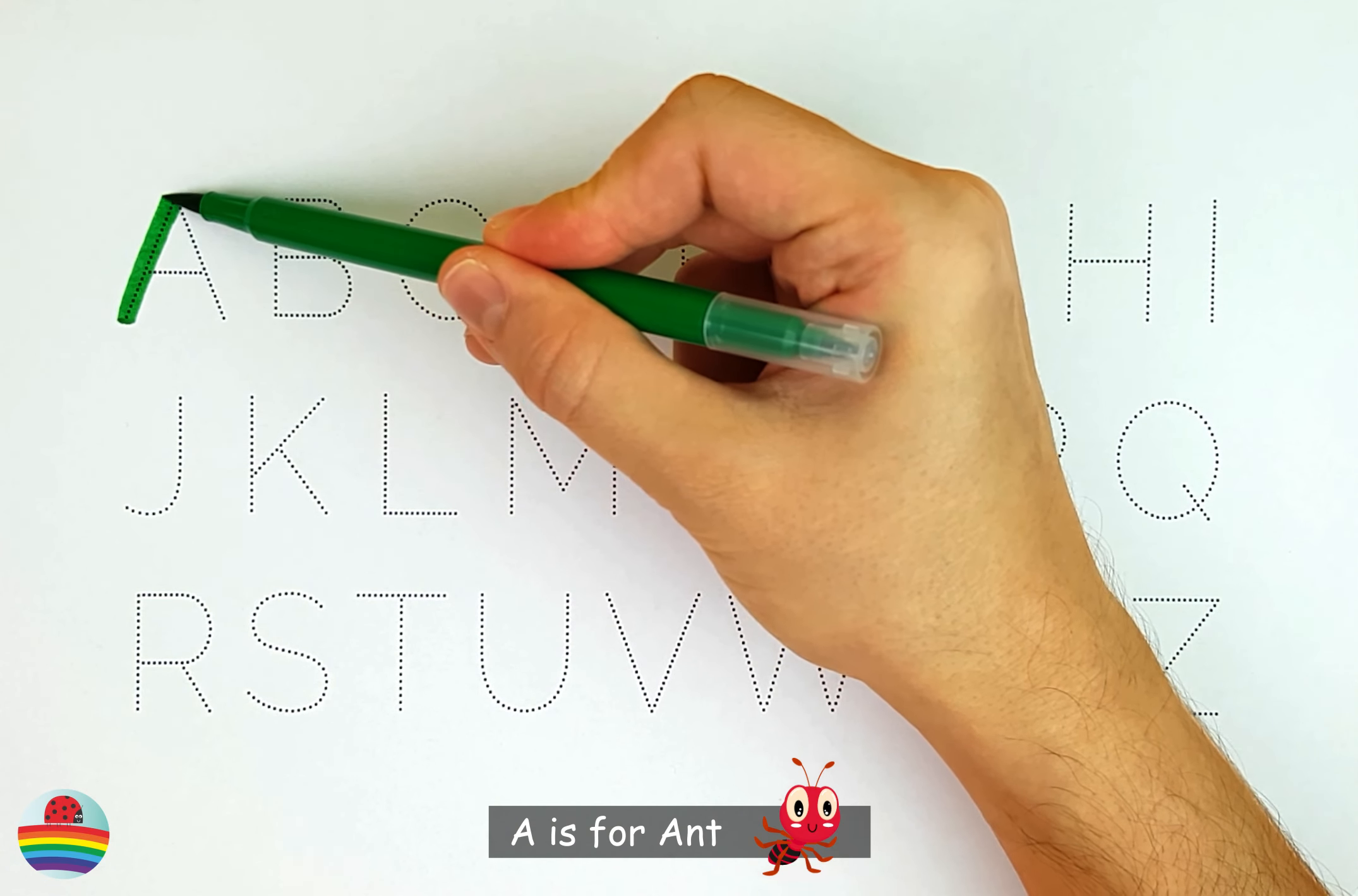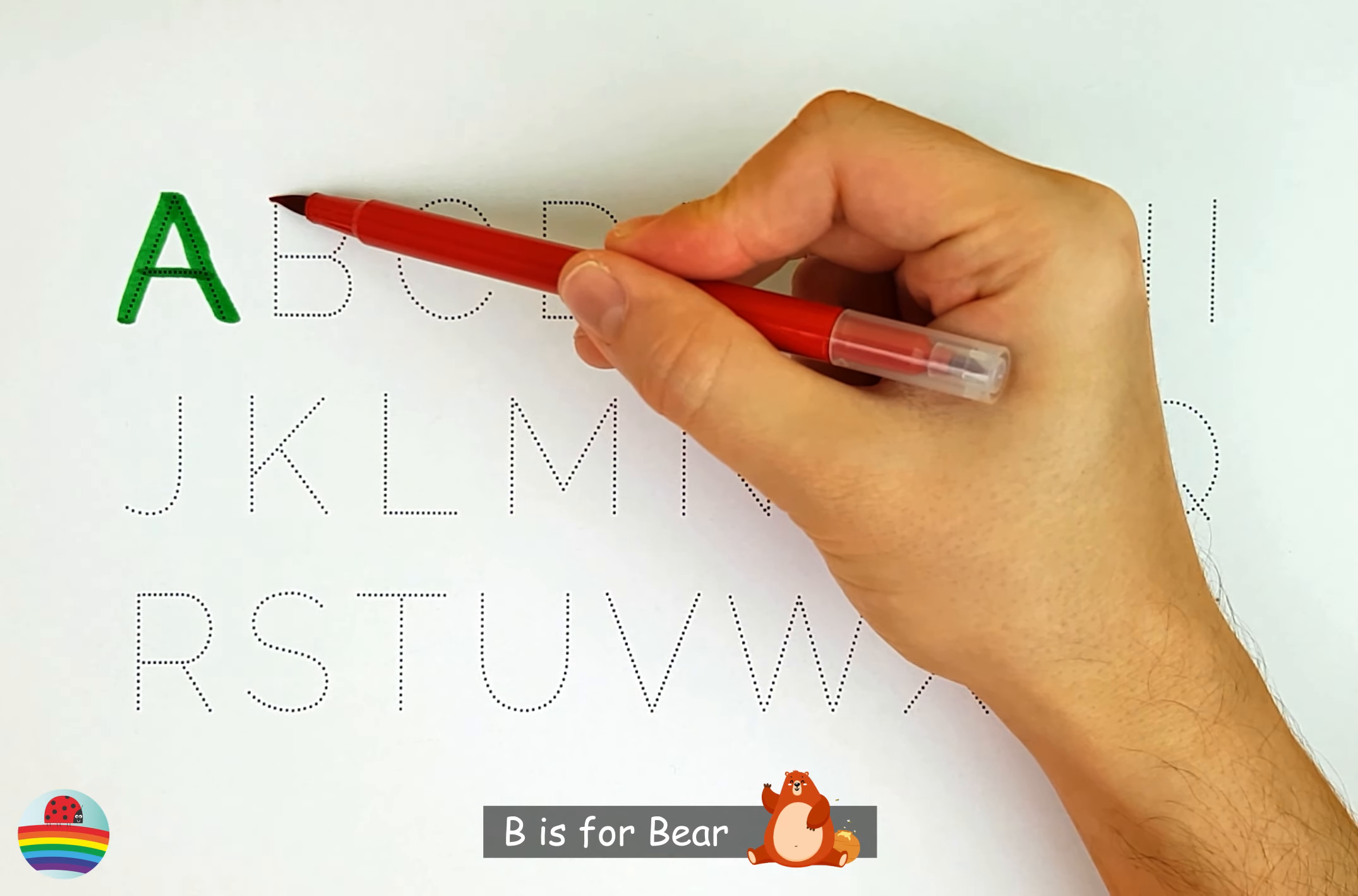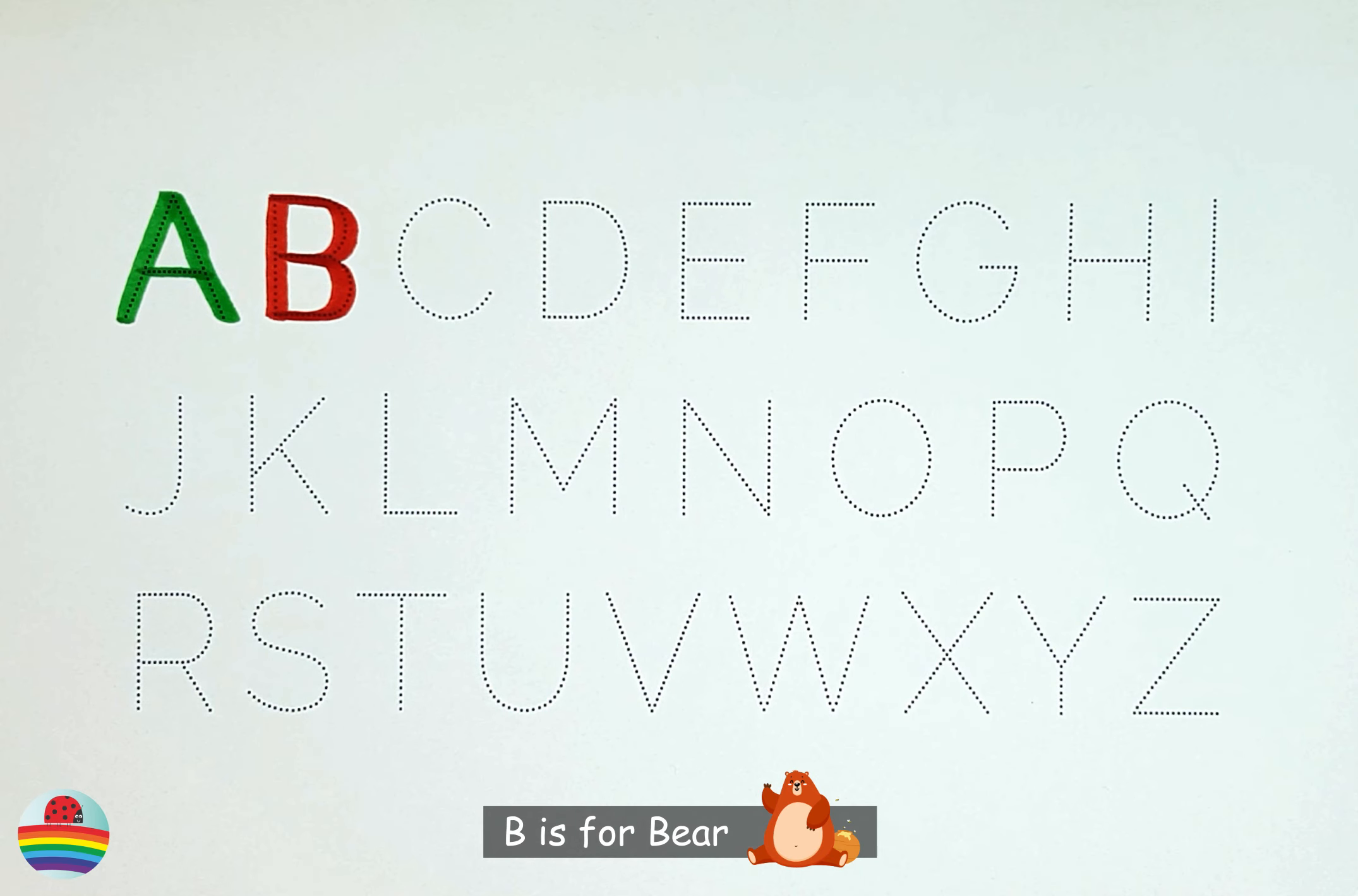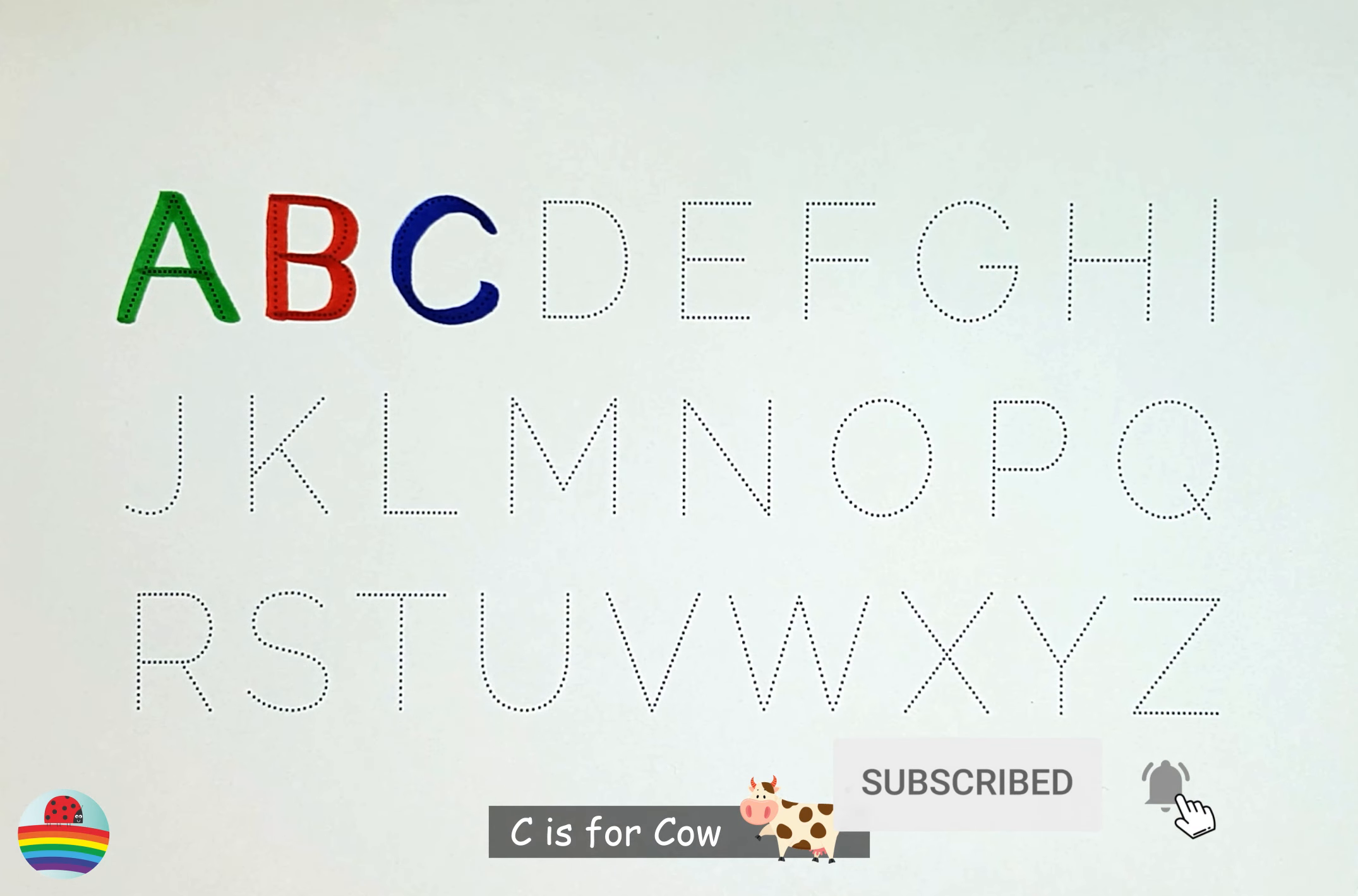A. A is for Ant. B. B is for Bear. C. C is for Cow.